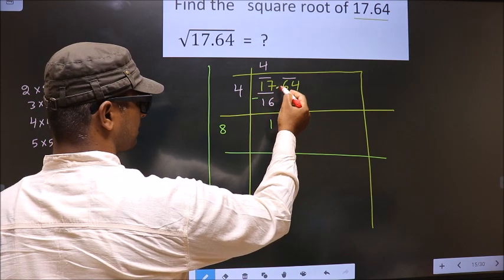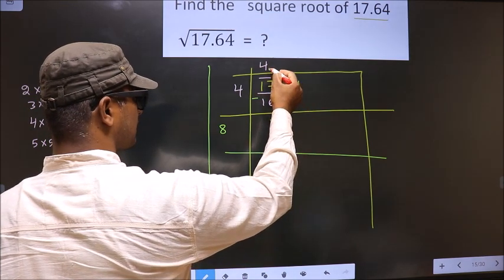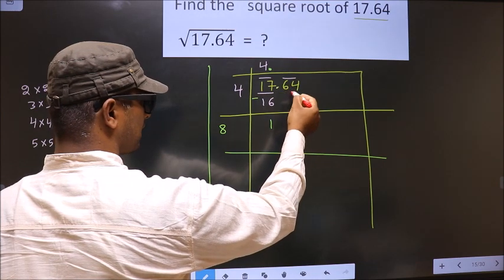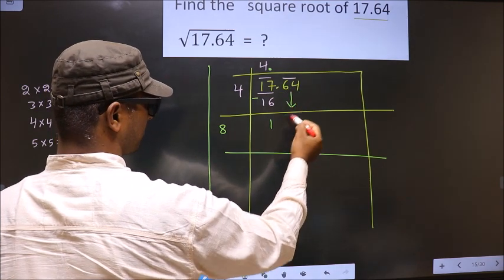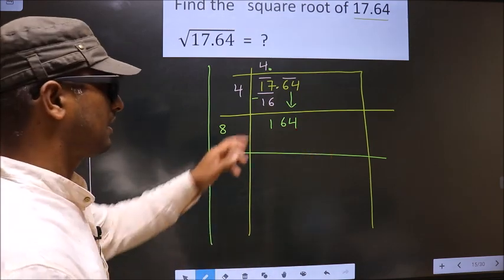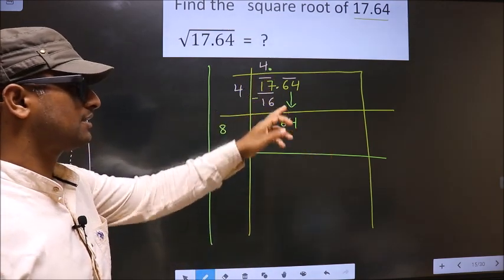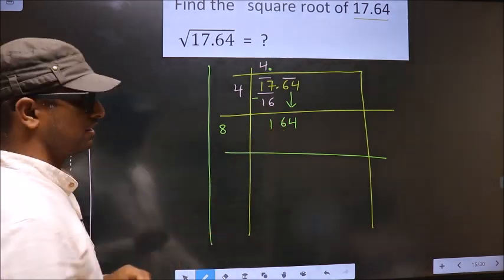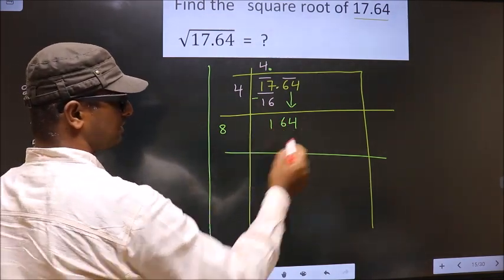Now here we have decimal. So you put the decimal as it is here. And after the decimal, the pair will come down, making it 164. Decimal you put here. That's it. This pair as it is will come down. Here no decimal. So here we have 164.